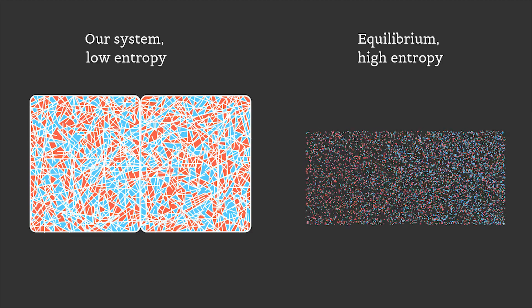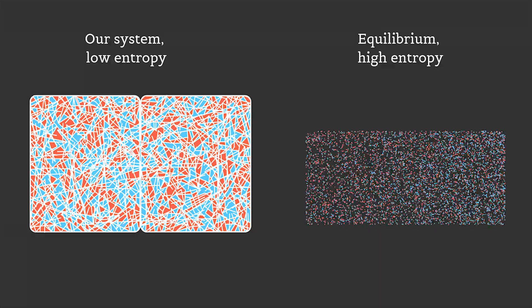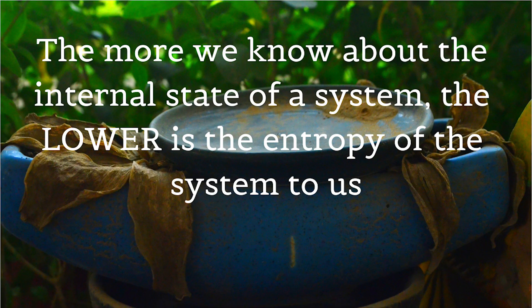But look at the system — if the whole system is mixed together with many restrictive boxes, it kind of looks similar to a system in equilibrium. The only difference is that in the first case we have the knowledge — the information — of where each molecule lies. In the case of equilibrium, we do not have that information. And that is the difference between high entropy and low entropy. The entropy was reduced purely because we had information about the system.